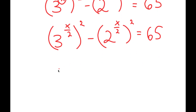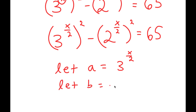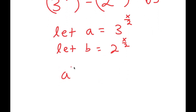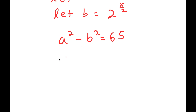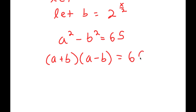Now I'm going to let the variable a equal 3 to the power of x over 2, and let the variable b equal 2 to the power of x over 2. So now I get a squared minus b squared is equal to 65. If I have something in the form a squared minus b squared, this is the same thing as a plus b times a minus b. So I get that equals 65.